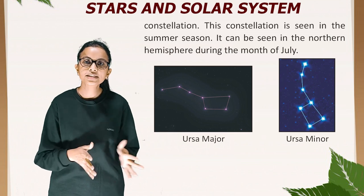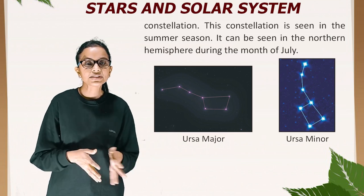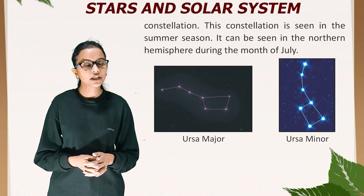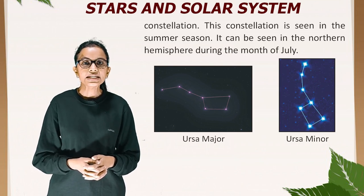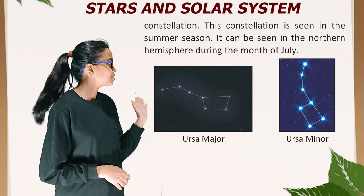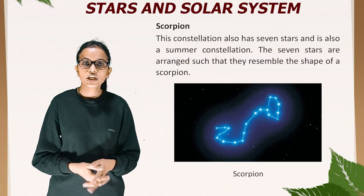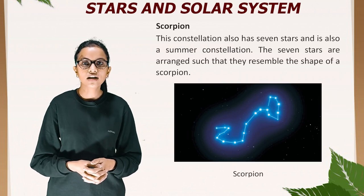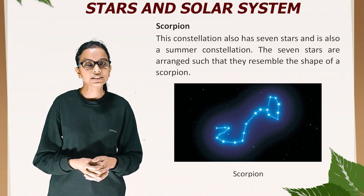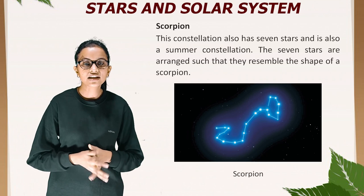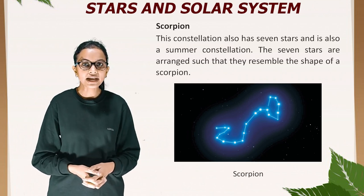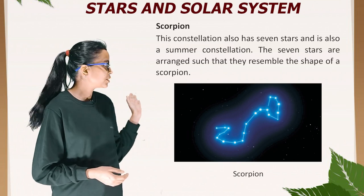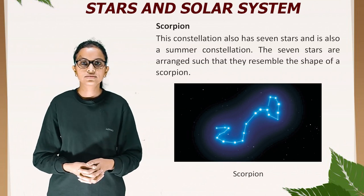The Scorpio constellation is seen in the summer season and can be seen in the northern hemisphere during the month of July. This constellation also has seven stars, arranged in such a way that they resemble the shape of a scorpion. It is also a summer constellation.